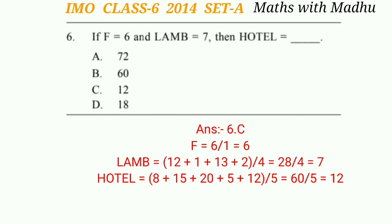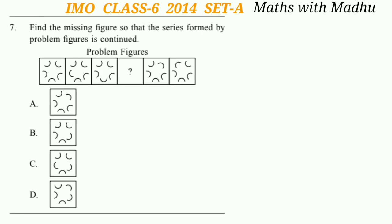Question 7: Find the missing figure so that the series formed by the problem figures is continued. In the first figure all figures face outside. In the second figure one figure faces inside, moving anticlockwise. Following this pattern, the answer for the question mark is option B.